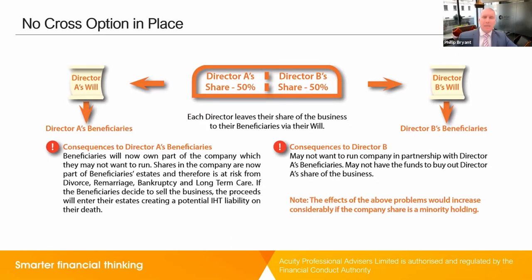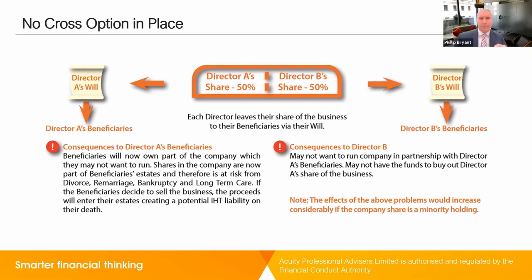So if there's no cross-option in place and there is just a standard will, the implications for beneficiaries are that they will now own part of the company, which they may not want to run. Shares in the company are now part of the beneficiary's estate and therefore at risk from future divorce, remarriage, bankruptcy and long-term care payments — all the risks associated with absolute ownership. If the beneficiaries decide to sell the business, the proceeds will enter their estates, creating a potential inheritance tax liability. The implications for the surviving shareholder are that they may not want to run the company in partnership with the deceased's beneficiaries, and they may not have the funds to buy out their share of the business, so they reach an impasse.